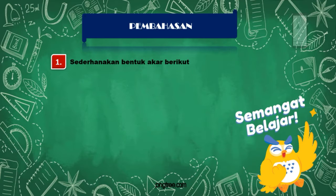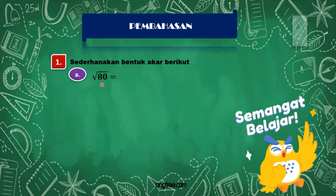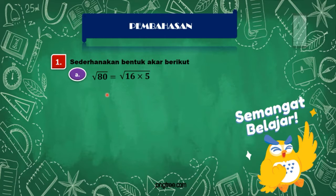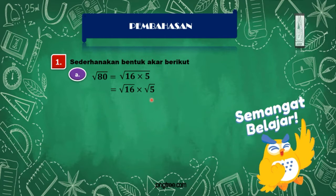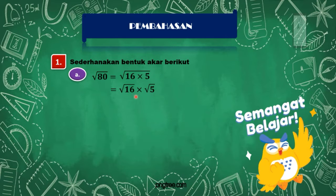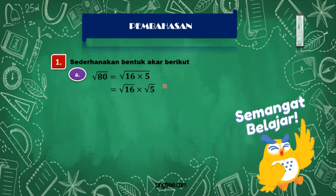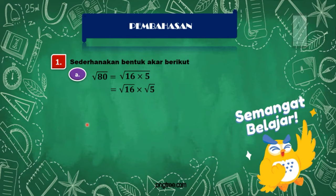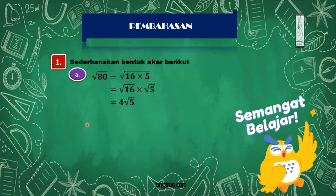Soal nomor 1, sederhanakan bentuk akar berikut. Yang A, akar 80. Nah disini bisa kita pecah menjadi akar 16 dikali dengan 5. Artinya disini adalah akar 16 dikali dengan akar 5. Akar 16 bisa kita akarkan yaitu 4, lalu akar 5 biarkan saja menjadi akar 5. Jadi jawabannya adalah 4 akar 5.